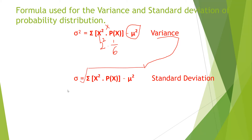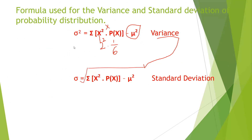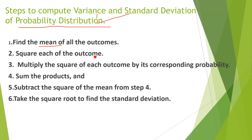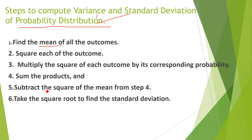We will start the problem, but first let me show how to calculate the mean and the steps for variance and standard deviation of a probability distribution. Step 1: find the mean. Step 2: square each outcome. Step 3: multiply the square of each outcome by its corresponding probability. Step 4: make the sum. Step 5: subtract the square of the mean. Step 6: take the square root to find the standard deviation.